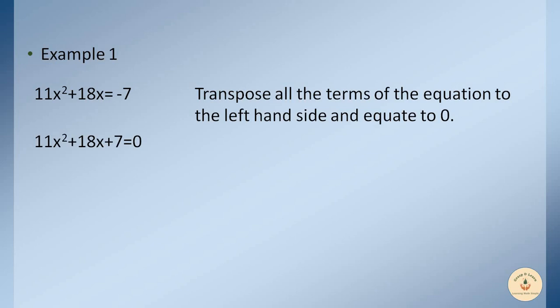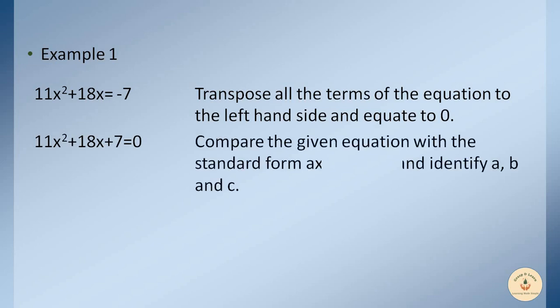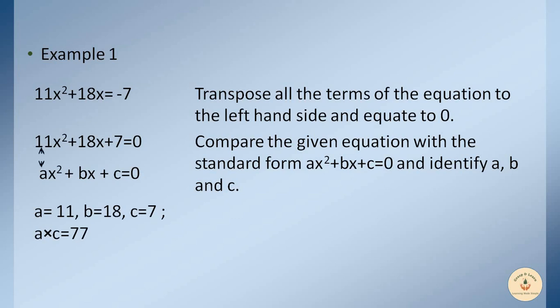The second rule is to compare the given equation with the standard form ax² + bx + c = 0 and identify a, b, and c. For our equation, a = 11, b = 18, and c = 7. So if we multiply a into c we get 77.